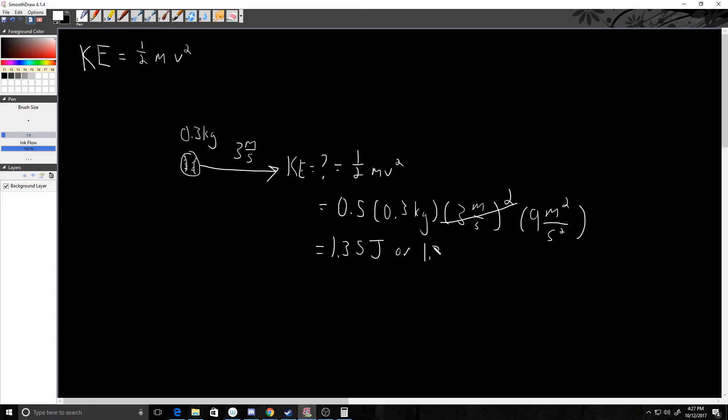Or, we have 1.35 kilogram meter squared per second squared. Kilograms on top, meter squared on top, second squared on the bottom. And really, this kind of goes back to the definition of work and the definition of kinetic energy. Part of it is work is a transfer of kinetic energy. Or, work is a change in kinetic energy. And to find work, we took force times distance. Or, we took mass times acceleration times distance.